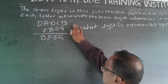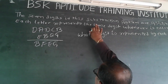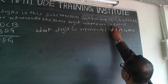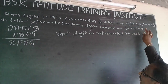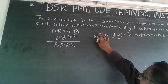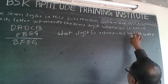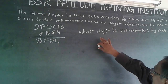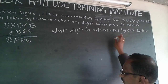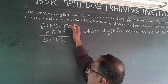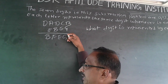The question I am going to handle now is: the 7 digits in this subtraction problem are 0, 1, 2, 3, 4, 5 and 6. Each letter represents the same digit whenever it occurs. What digit is represented by each letter? The problem is BADCD minus EBG equals BFEG.